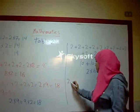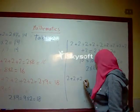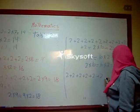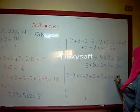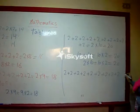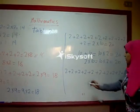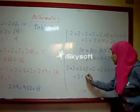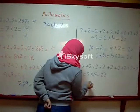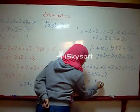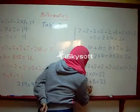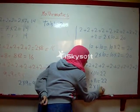Two plus two plus two plus two plus two plus two plus two plus two plus two plus two plus two equals two times eleven equals twenty-two. Eleven plus eleven equals twenty-two. Then we get two times eleven equals eleven times two equals twenty-two.